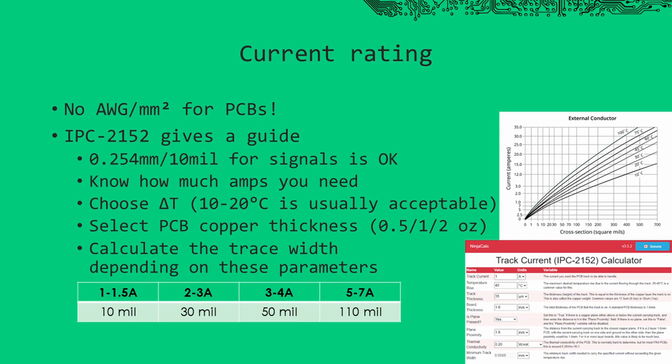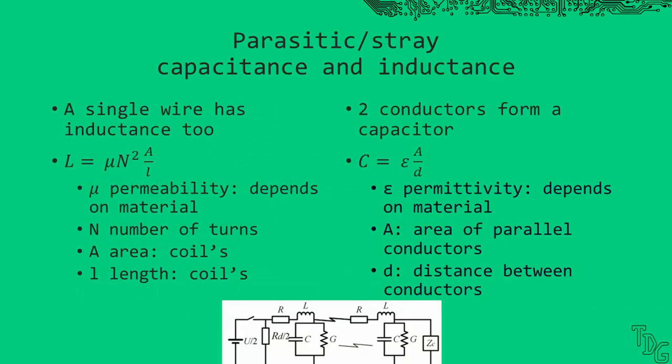If you need to route signals, you can use the default 10-mil trace width, that's fine. But when you need to squeeze amps for power, you must do some calculations. Know how much amps you need, the accepted temperature rise, and what manufacturing process you use. Put them in a calculator and that's it. Use this trace width for your application. I usually need only a few amps in my applications, so I pre-calculated some trace widths as a guide. The standard 10-mil traces perform surprisingly well.